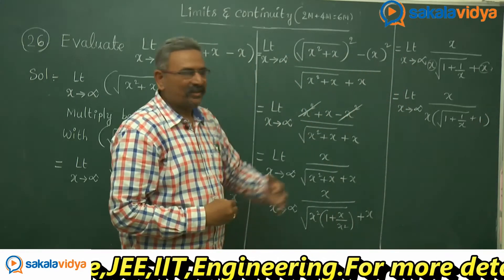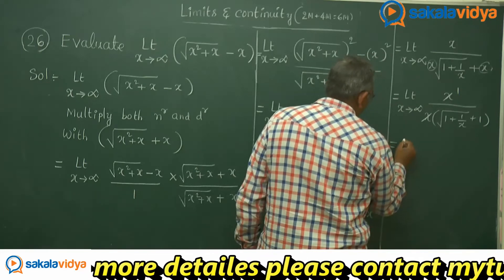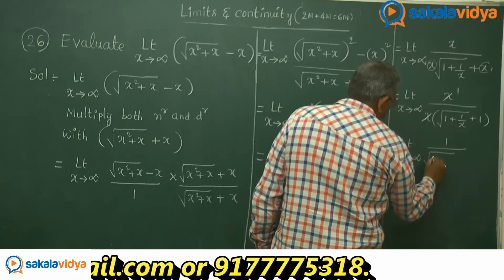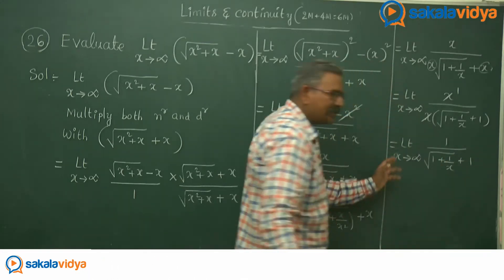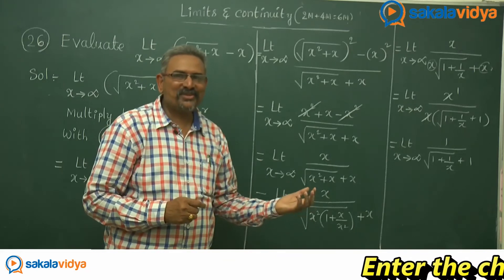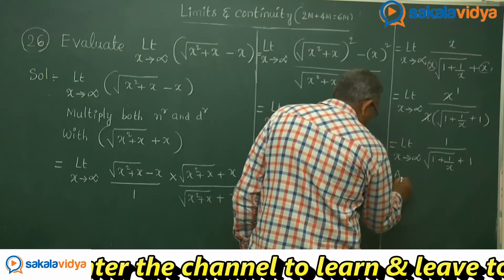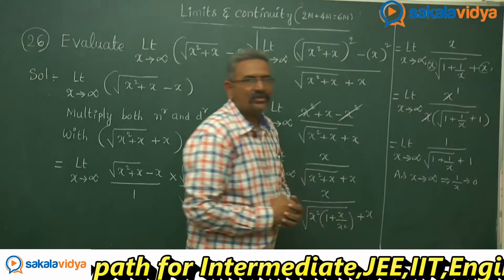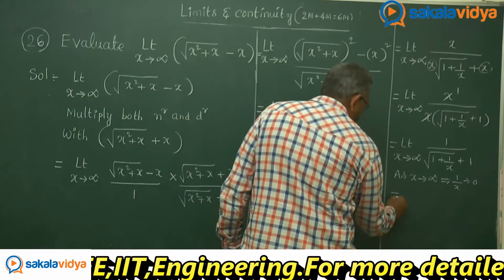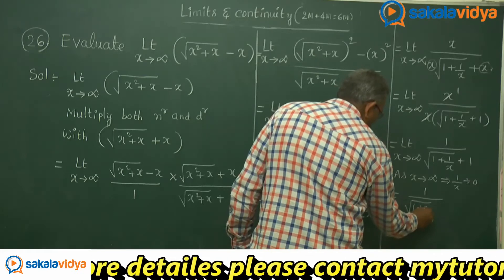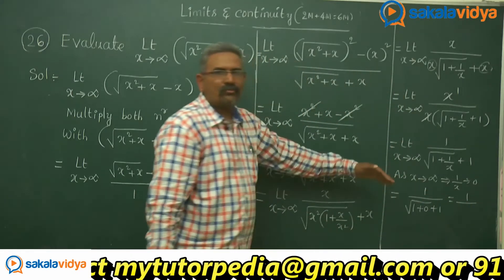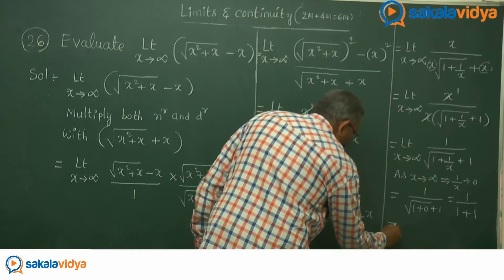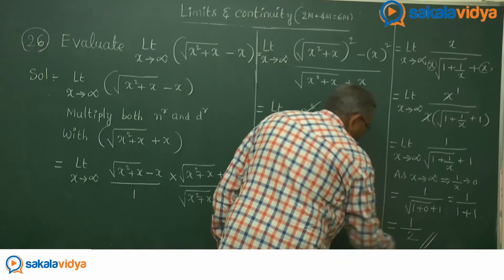Very interesting — x and x cancel. We have limit x tends to infinity of 1 divided by root of 1 plus 1/x plus 1. As x approaches infinity, 1/x approaches 0. So replacing 1/x with 0, we get 1 divided by root of 1 plus 0 plus 1, which is 1 divided by root 1 plus 1. Root of 1 is 1, so we get 1 divided by 1 plus 1, which equals 1 over 2. This is the answer.